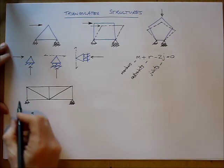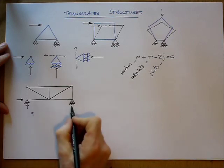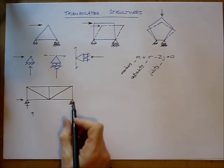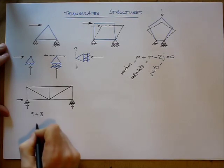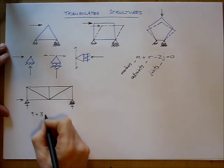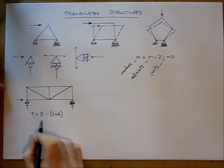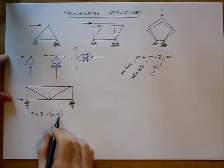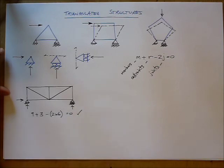How many restraints are there? Well, there are two restraints at a pin support, and there's one restraint at a vertical roller. So, that's three in total. How many joints are there? 1, 2, 3, 4, 5, 6. Minus 2 times 6. Well, how does this add up? 9 plus 3 is 12. 2 times 6 is 12. The whole thing adds to 0. It's statically determinate.